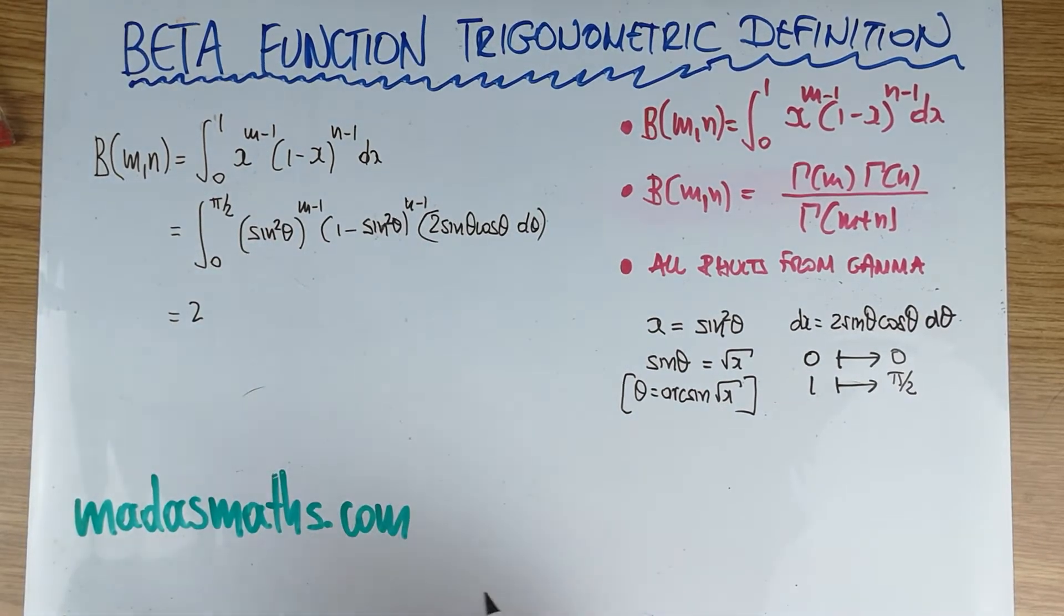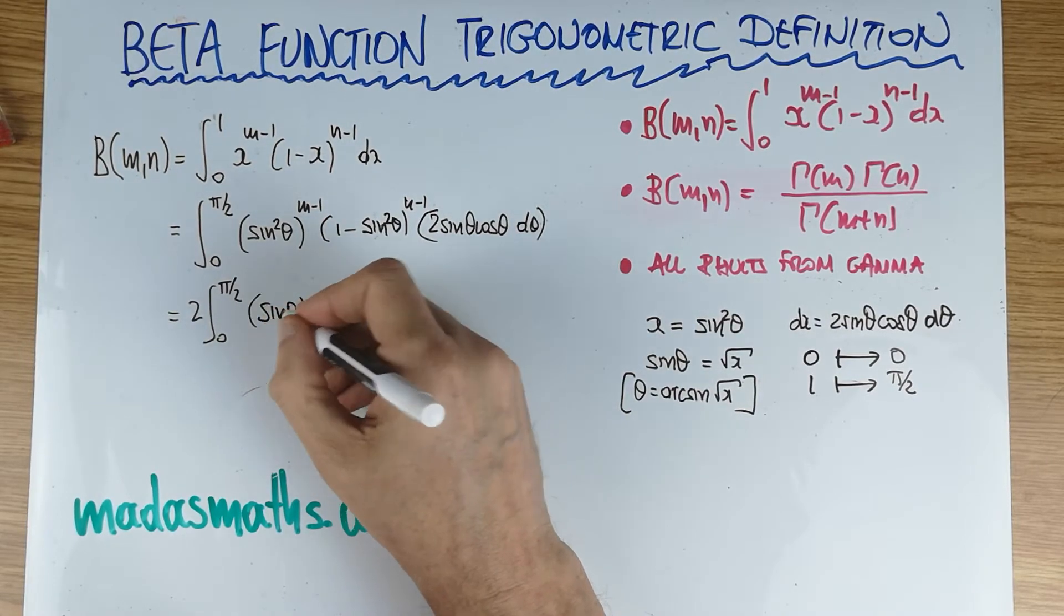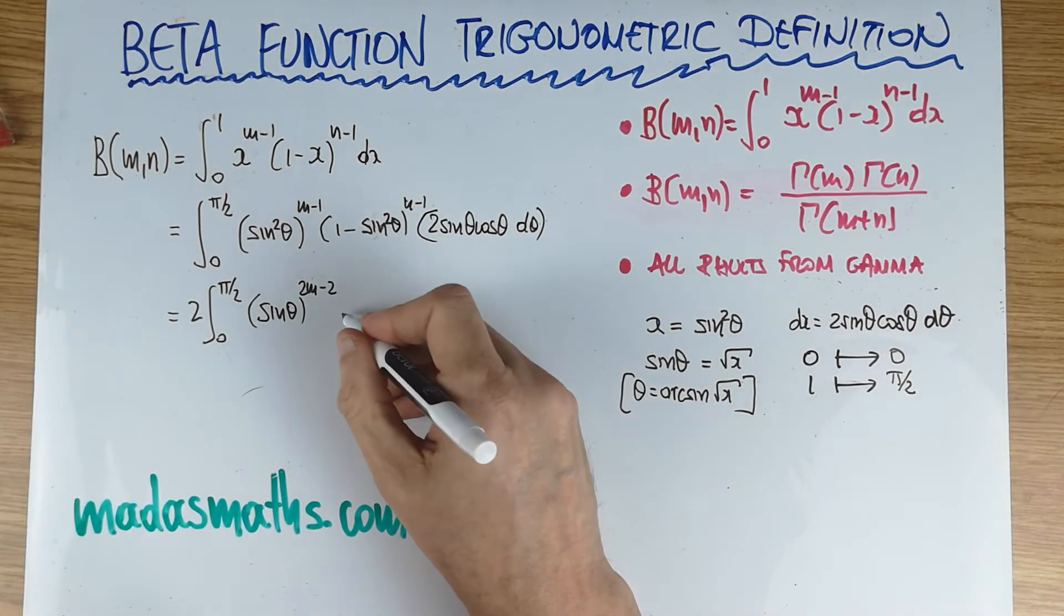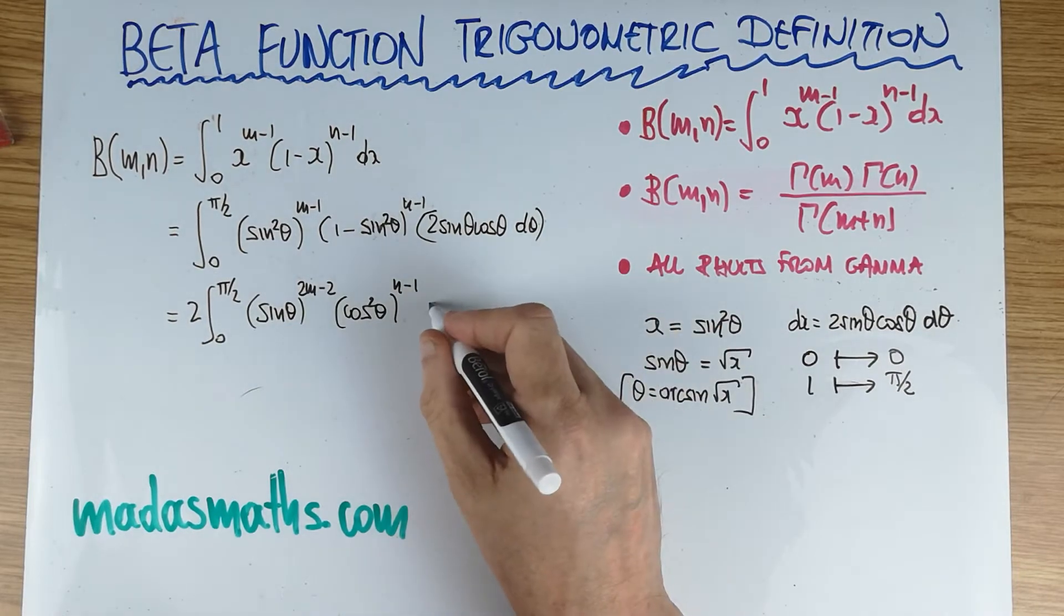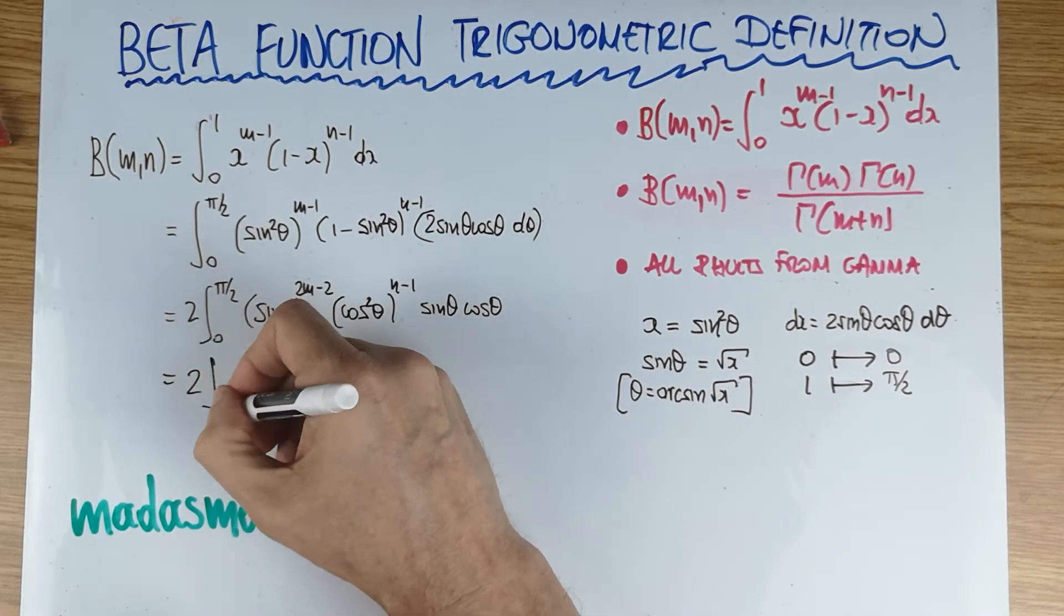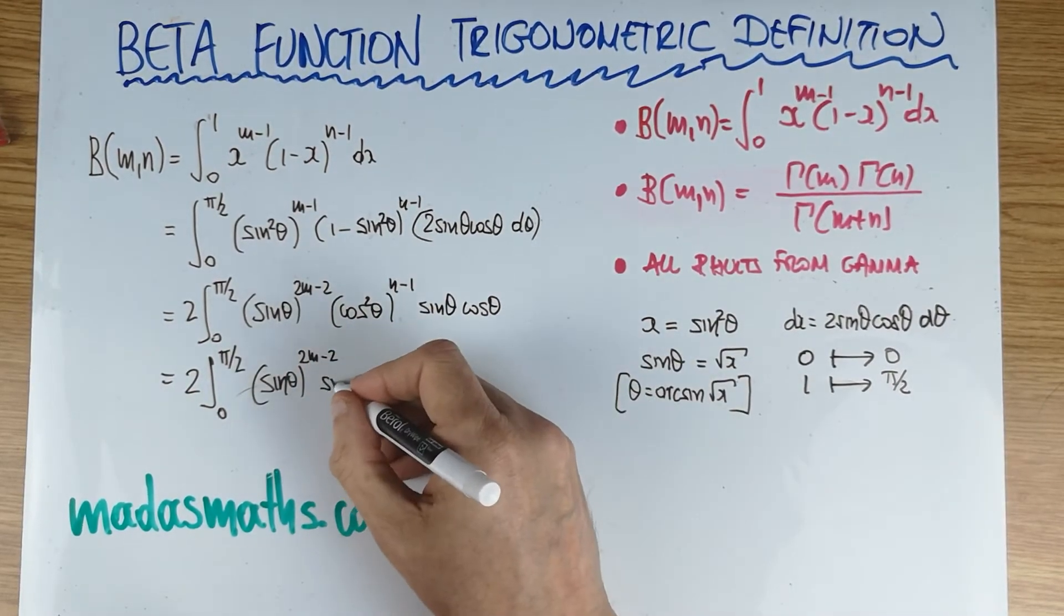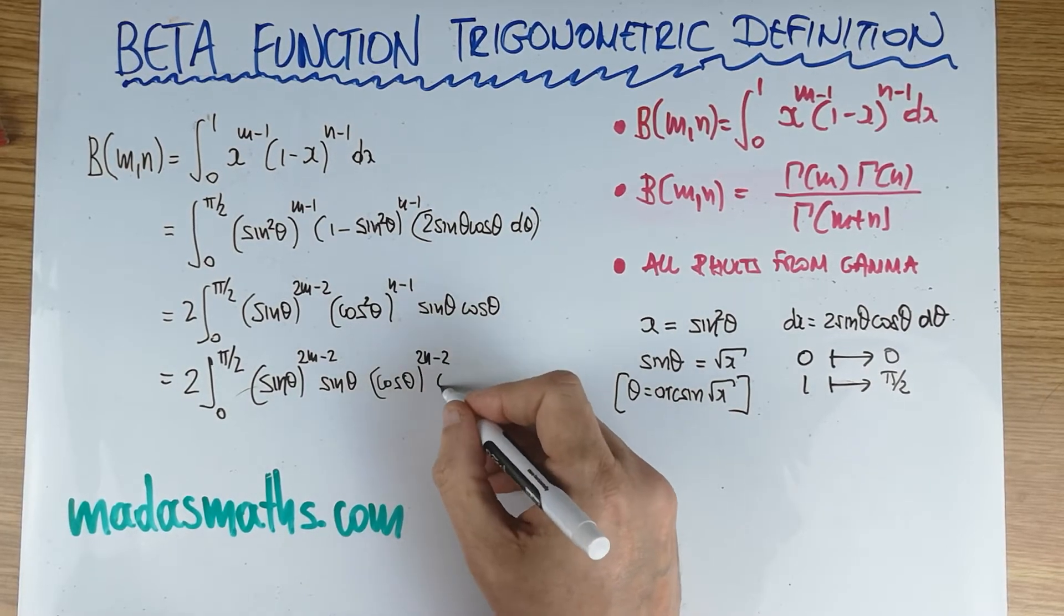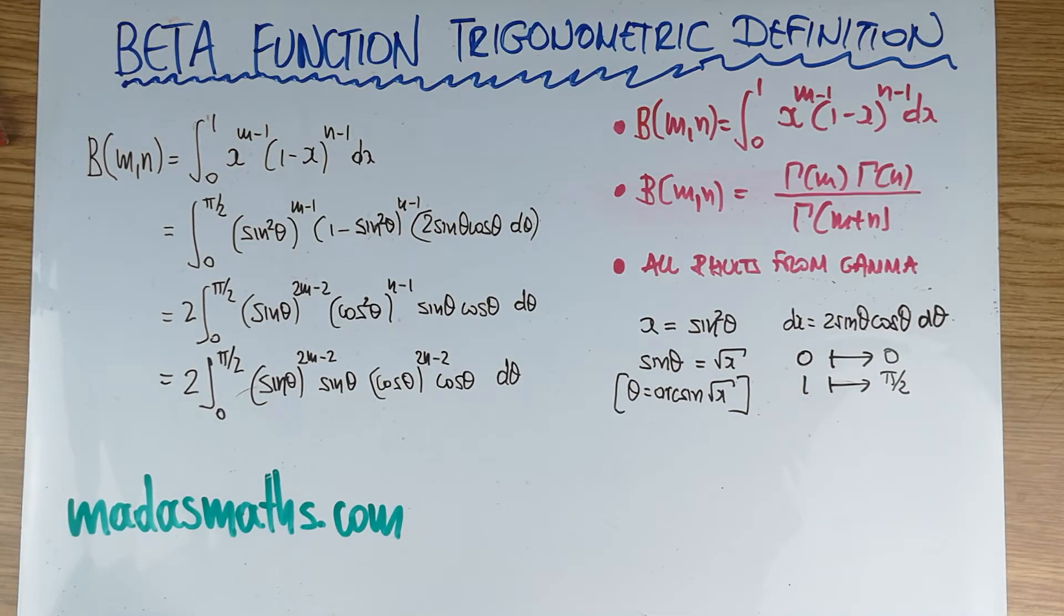That's the 2 pulled outside. We're going to write this as sine theta to the 2m minus 2, and then cosine squared theta. So that's sine of theta to the power of 2m minus 2. Let's put the other sine next to it. Then we got cosine of theta to the power of 2n minus 2, with another cos next to it.